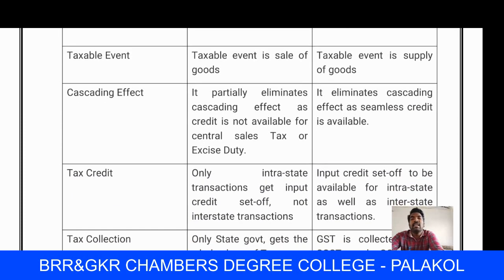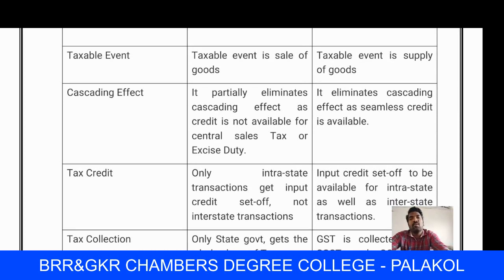Next, taxable event. In VAT, the taxable event is the sale of goods — tax is collected on the sale of goods. But in the GST system, the taxable event is the supply of goods. The difference is: sale of goods means one person to another person, while supply of goods covers supply from retailer to consumer.